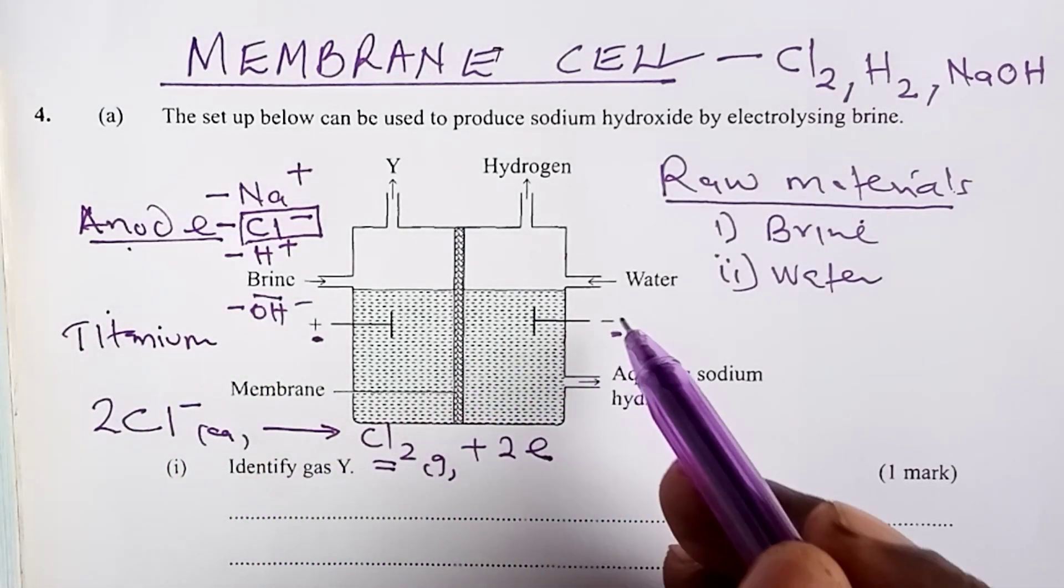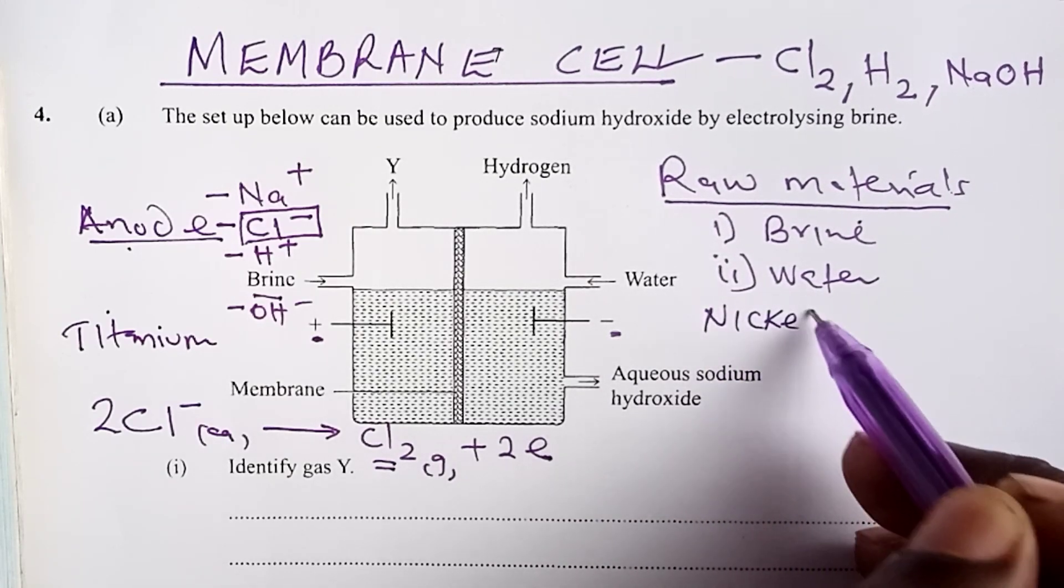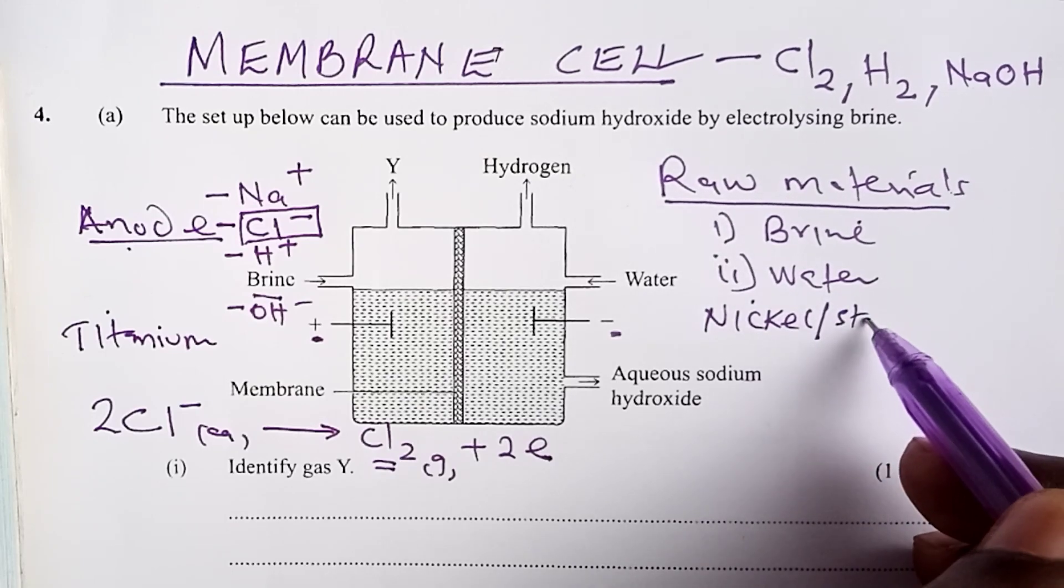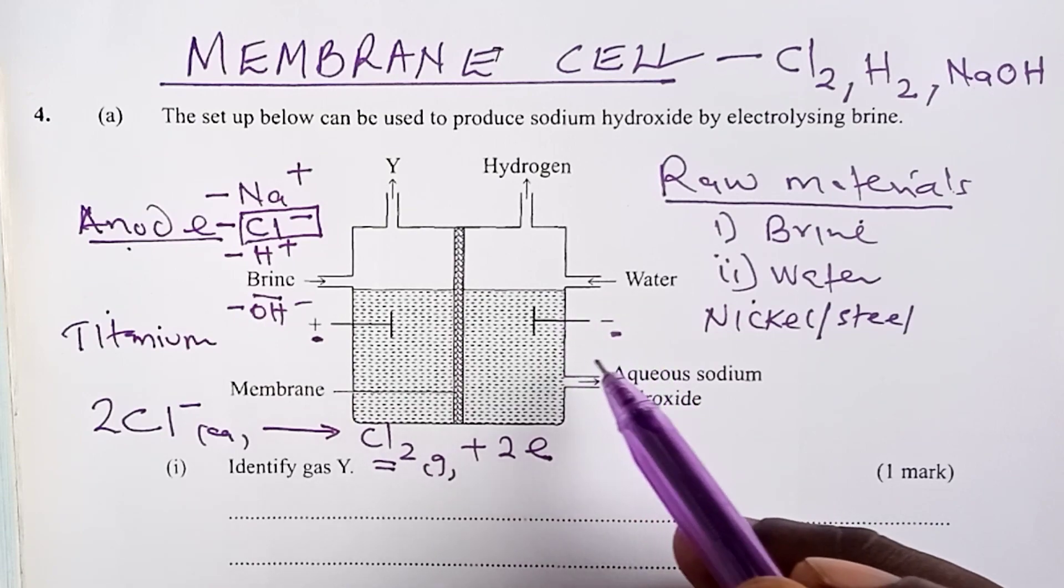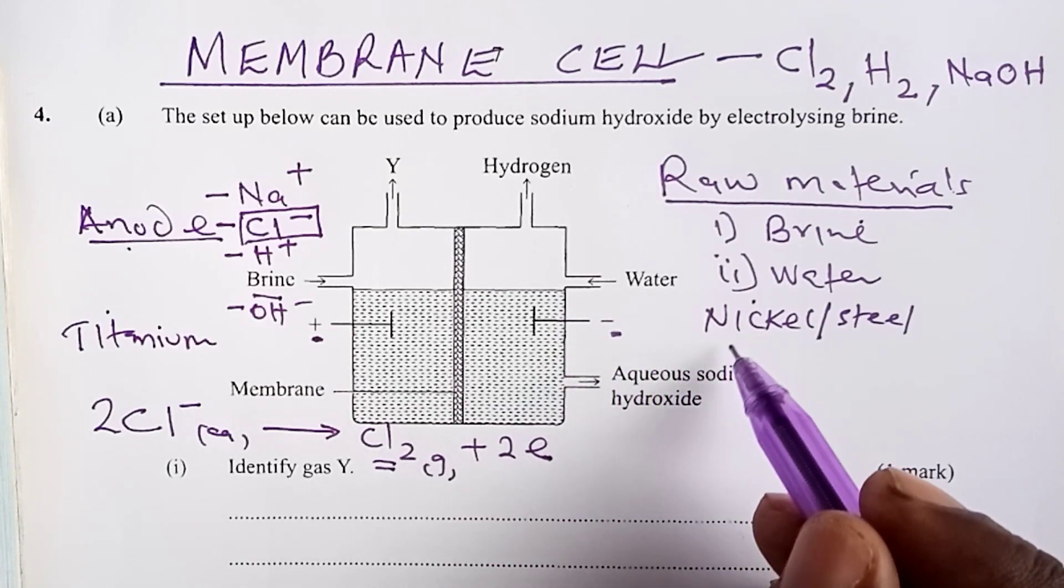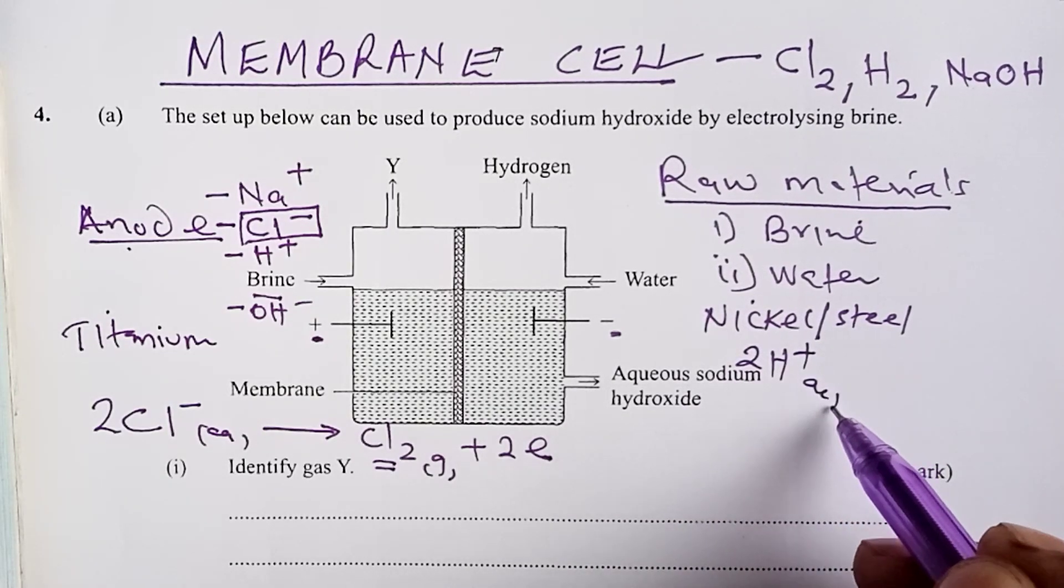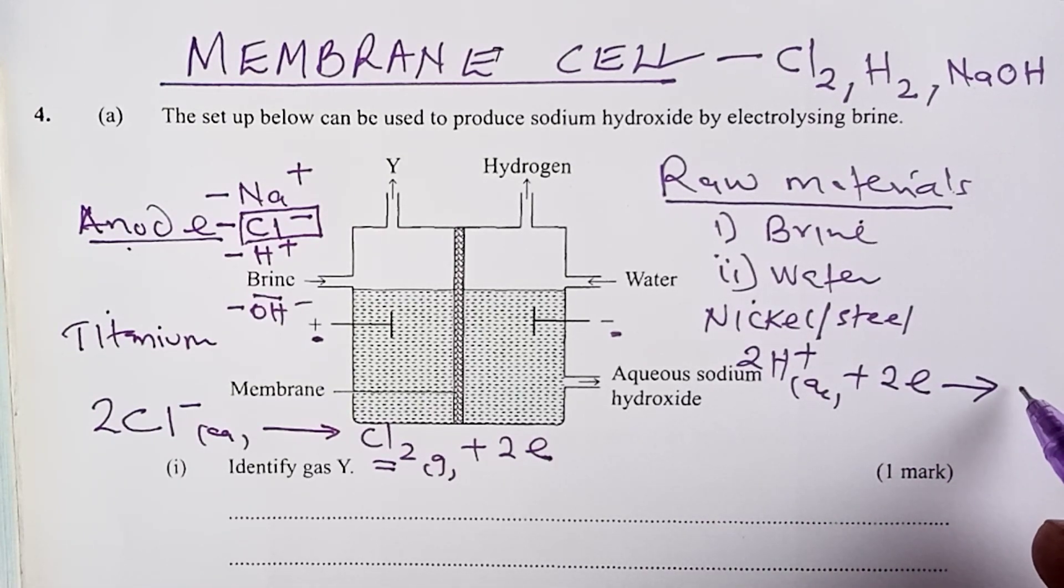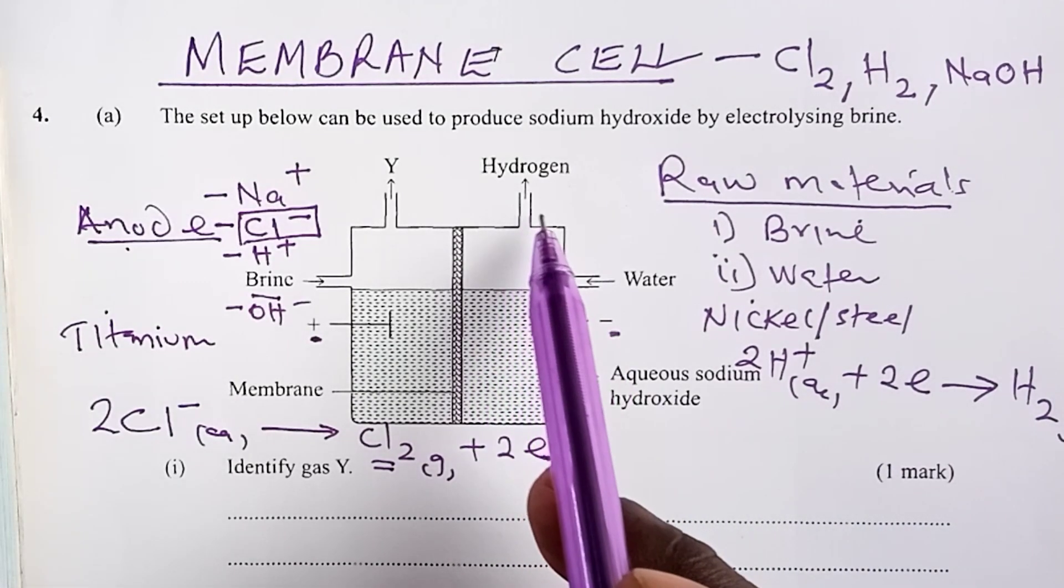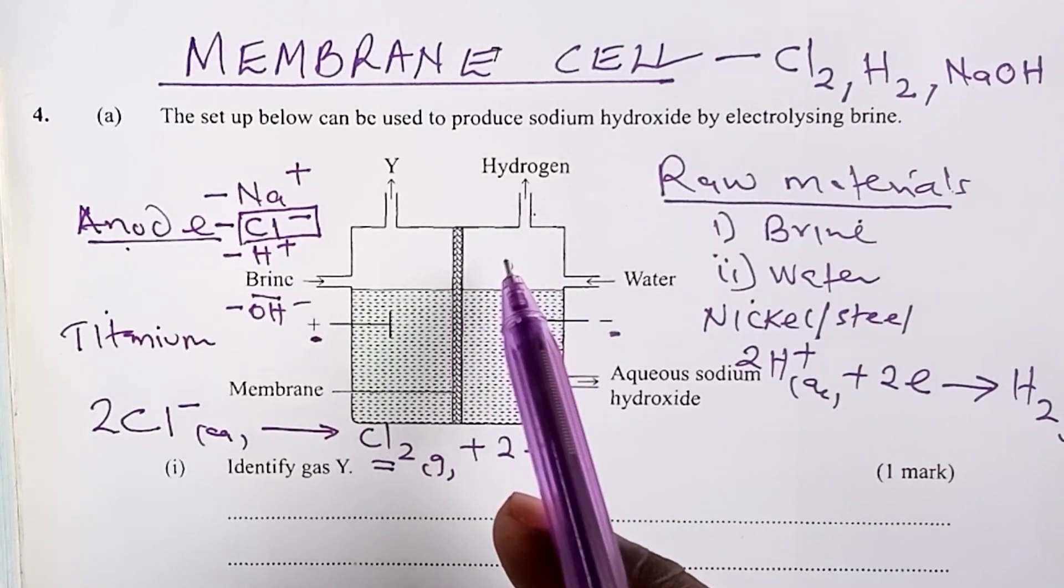Moving to cathode, the first thing we need to know is that cathode is made of either nickel or steel. And because we are bringing in water, at cathode, we shall discharge two moles of hydrogen ions through acceptance of two moles of electrons, and we are able to get hydrogen gas that then leaves as shown by the arrow through this other opening.